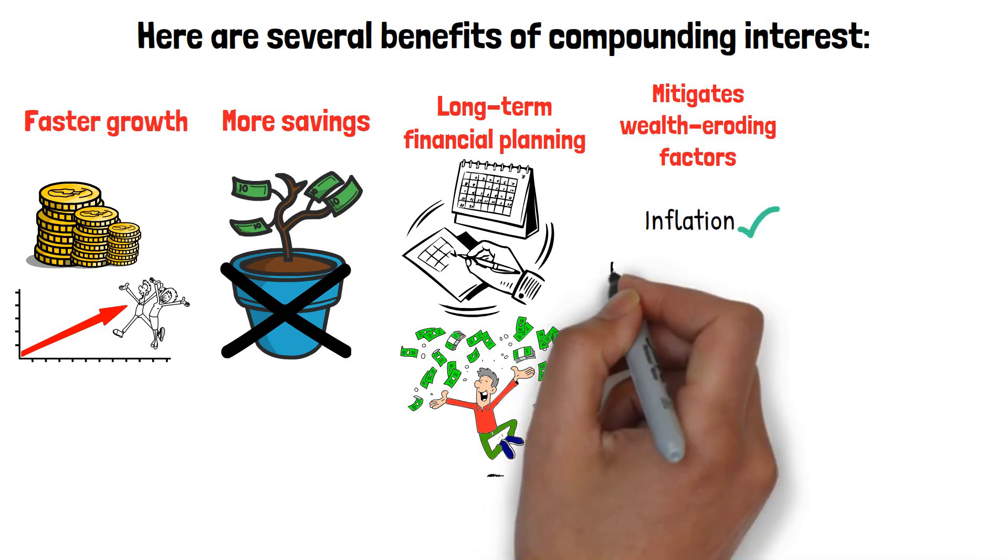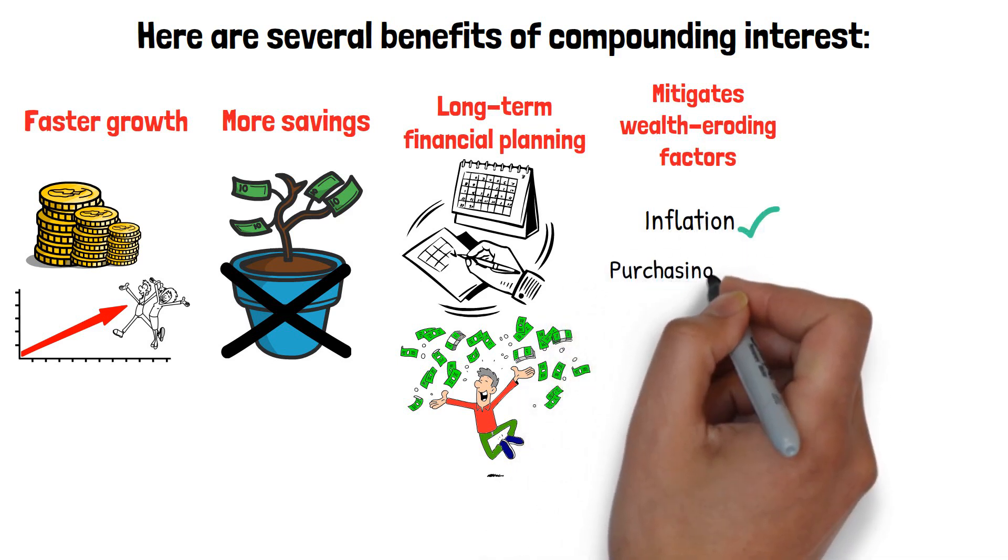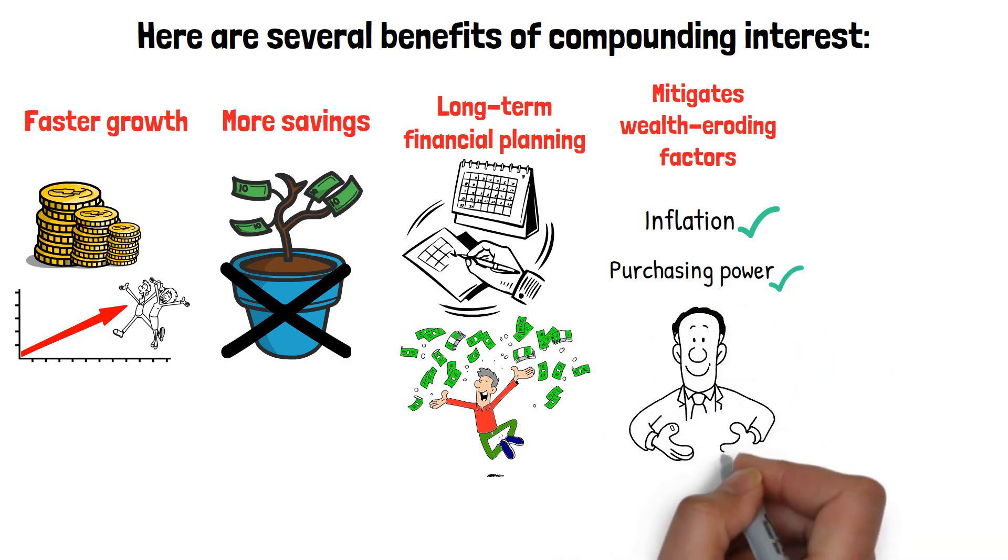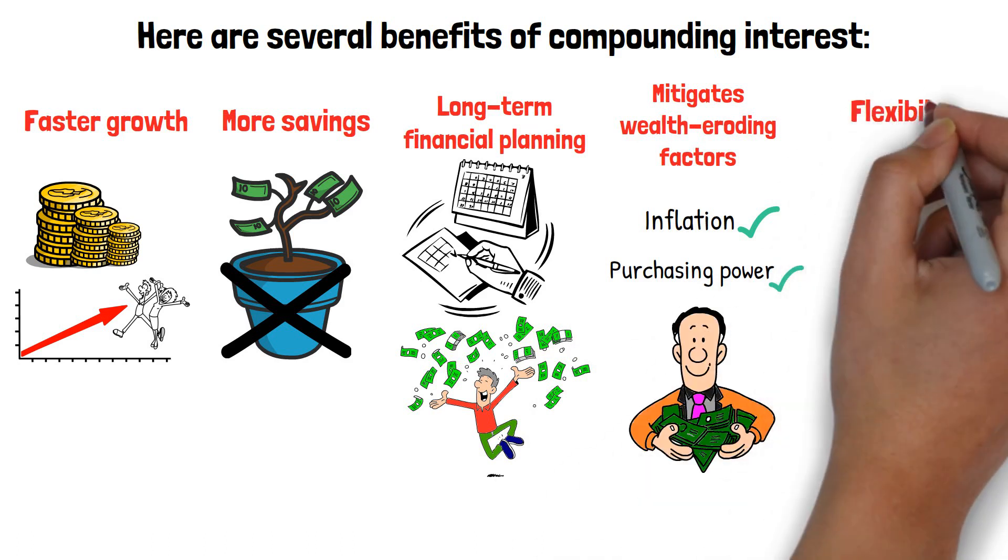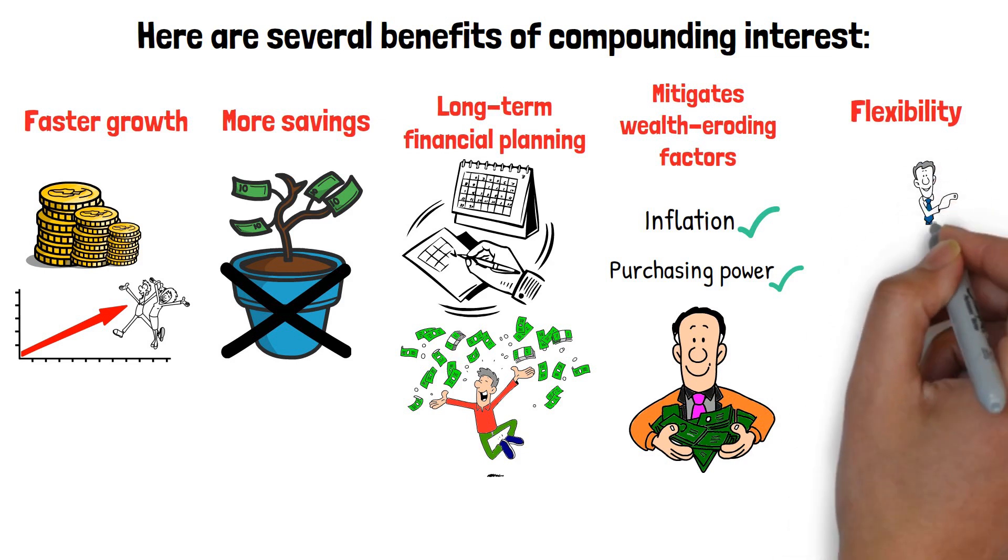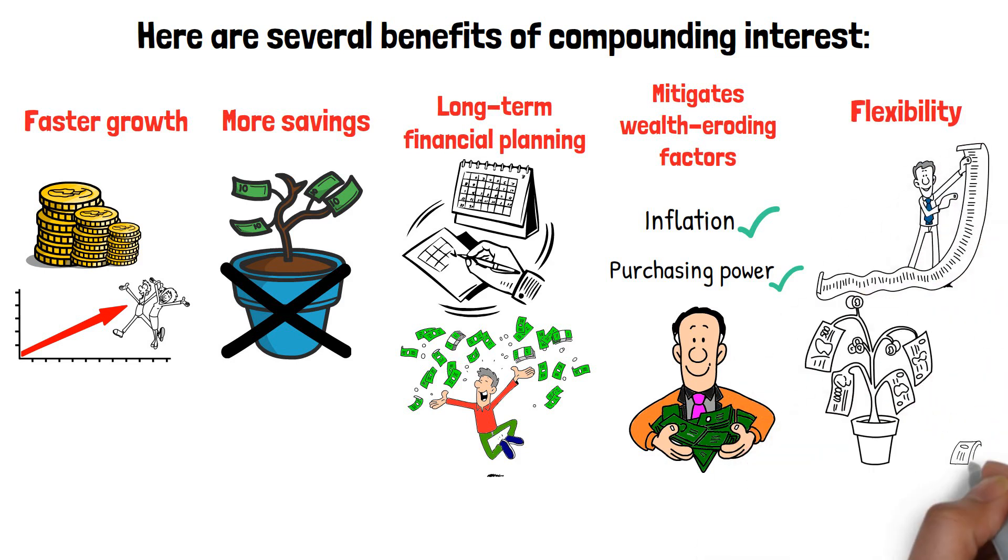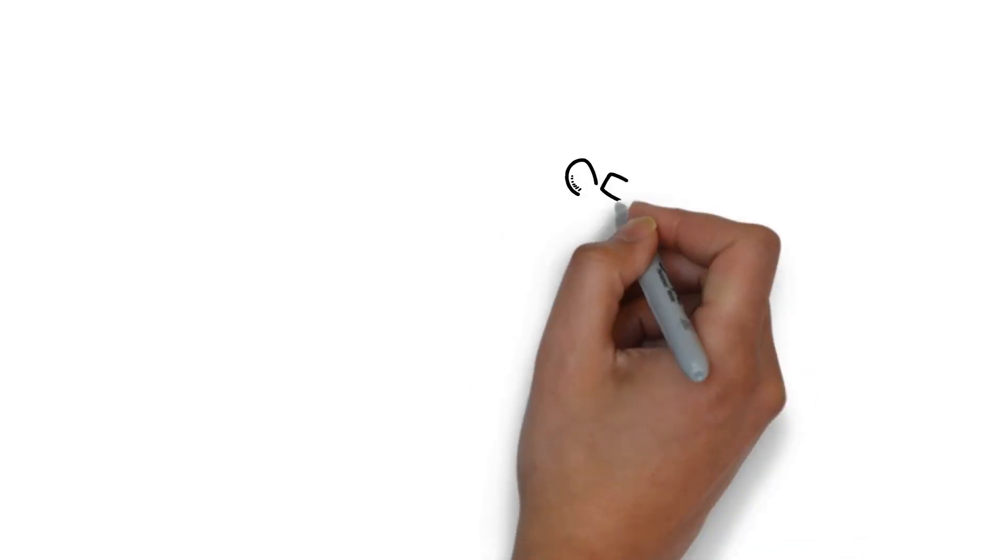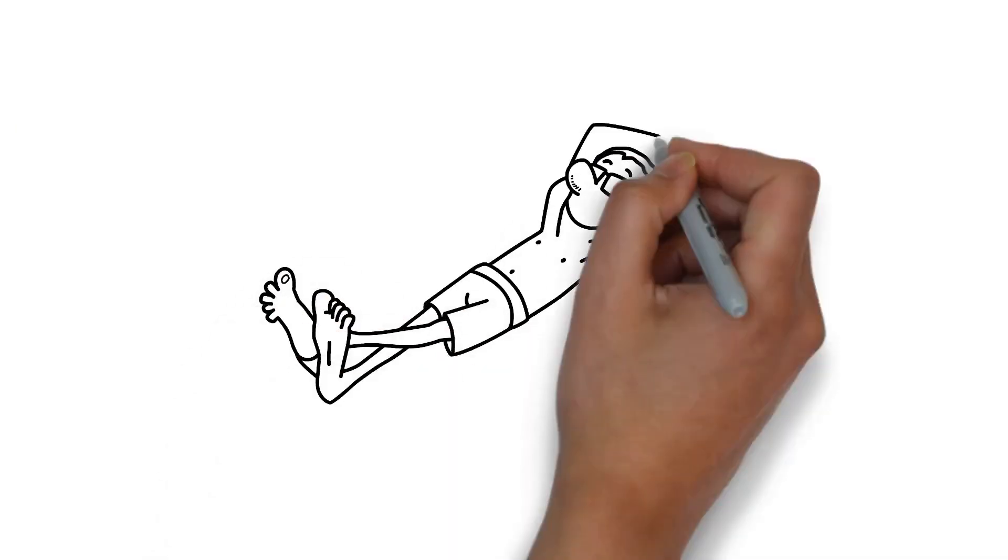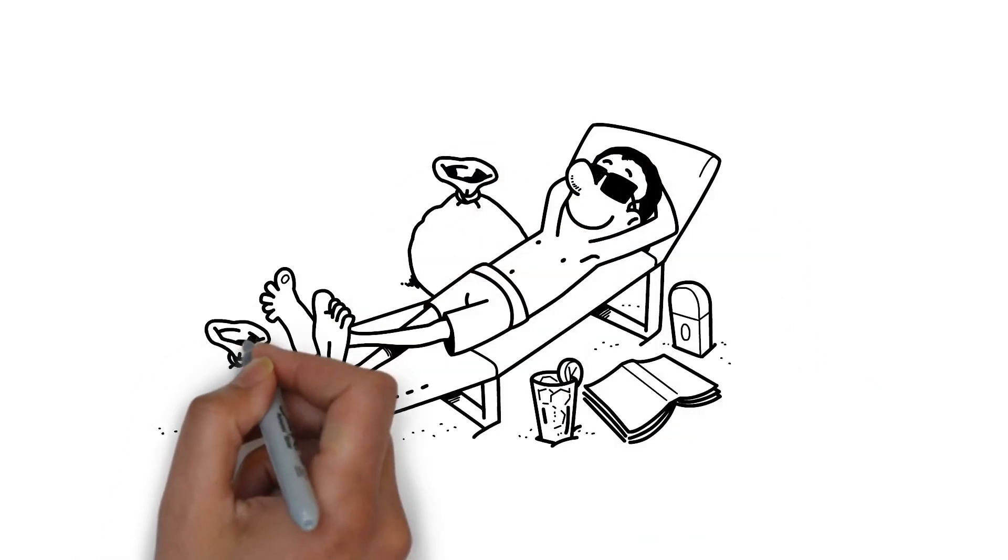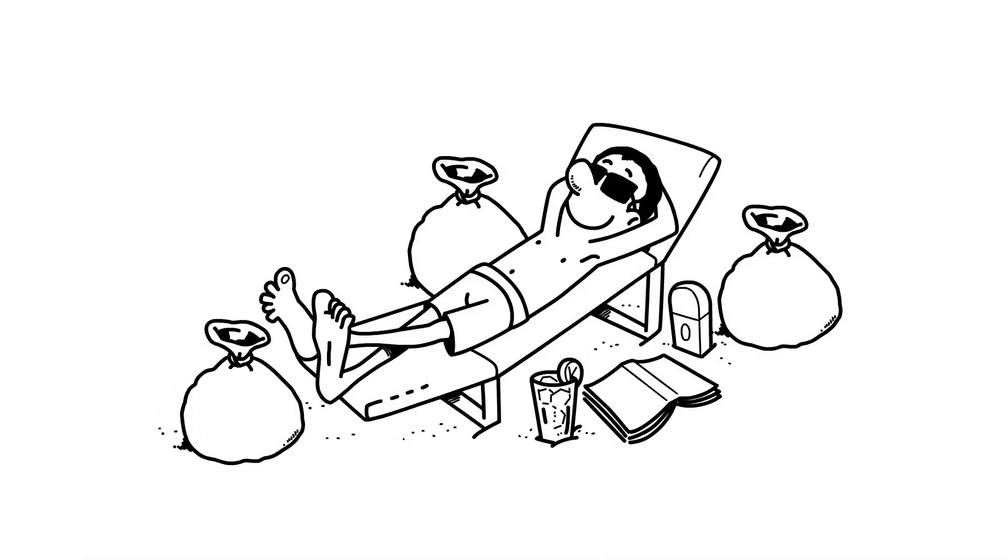Long-term financial planning - compound interest is an excellent tool for long-term financial planning because it can assist you in meeting your financial goals over time. It mitigates wealth eroding factors - compound interest can help mitigate wealth eroding factors such as inflation and purchasing power declines, allowing you to keep the value of your money over time. Flexibility - compound interest investment accounts come in various forms, giving you flexibility in investing and growing your money. Compound interest is a powerful tool that can help you accumulate wealth and achieve your financial goals over time. The earlier you begin investing, the more money you can earn through compound interest.